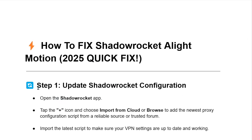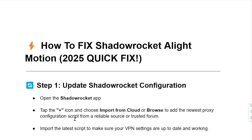Step 1: Update Shadow Rocket configuration. Open the Shadow Rocket app, tap the plus icon and choose Import from Cloud or Browse to add the newest proxy configuration script from a reliable source or trusted forum. Import the latest script to make sure your VPN settings are up to date and working.